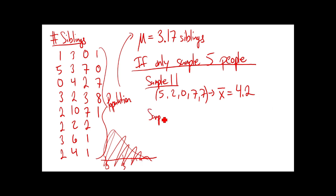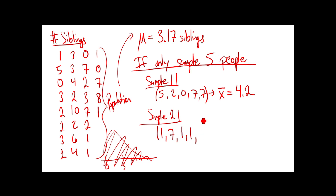Let's say I take another approach - maybe I go with a systematic approach but do every other person starting in the back corner. How many siblings do you have? One. Eight. Then going every other - seven. Back corner, how many? One. Skip to Maddie - one. Skip another person over to Brittany - seven. What's the sample mean of this sample? Three point four.